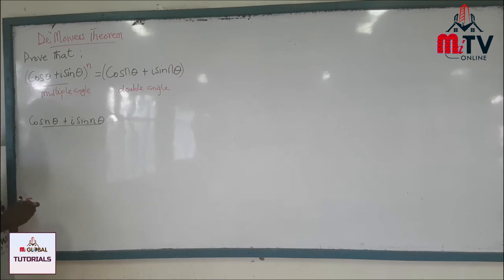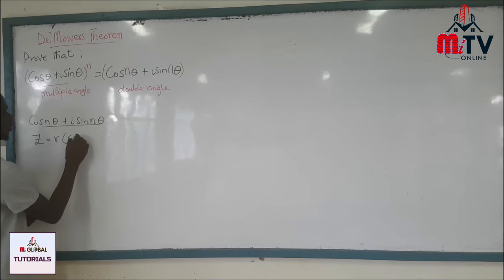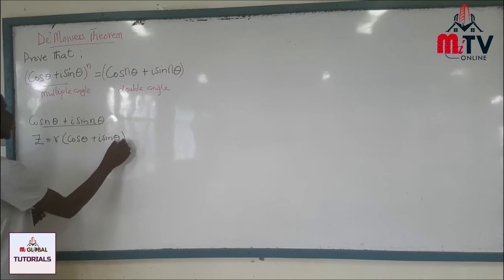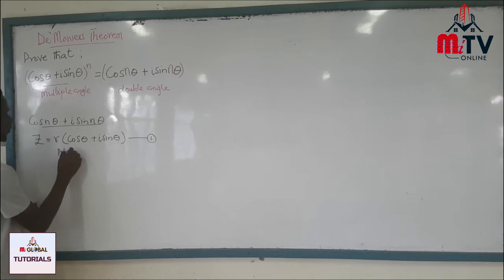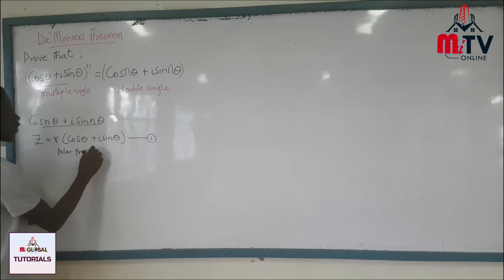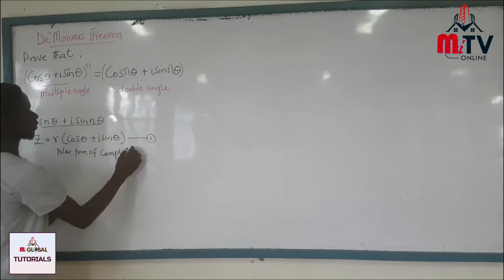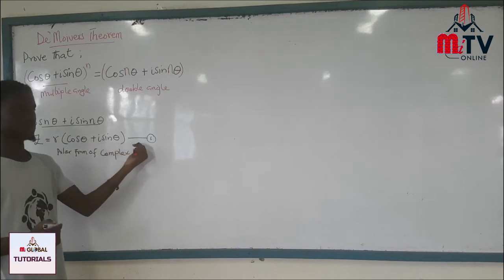From the polar form of a complex number, z is equal to r(cosθ + i sinθ). This is Equation 1 — the general polar form of a complex number.